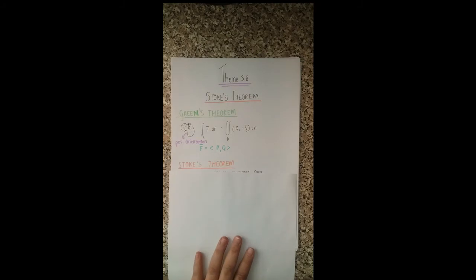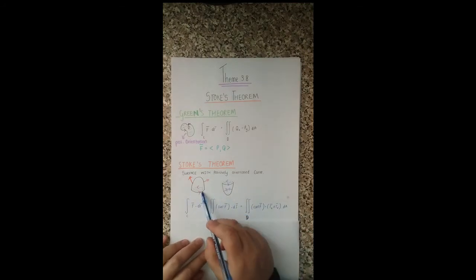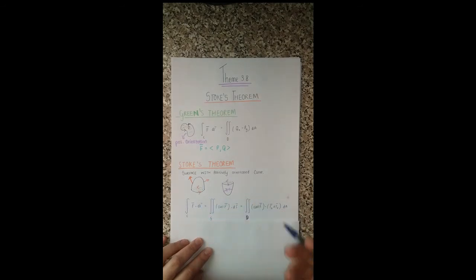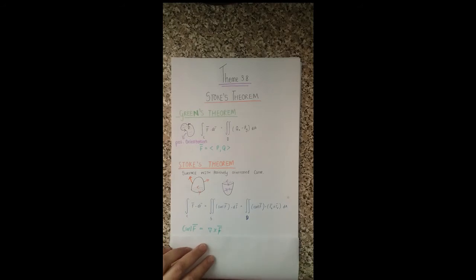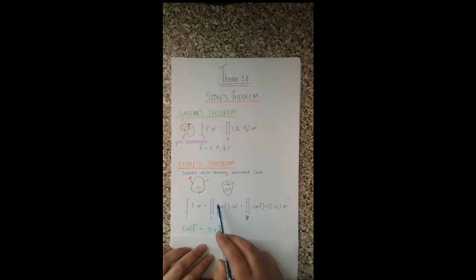What Stokes' theorem does is relate the line integral of a curve to a surface that is above the curve. The surface has to have a positively orientated curve, and basically what it says is that the line integral of the flux is equal to the double integral of the curl of F dotted with dS. So it's the flux integral of the curl — and we're working with surfaces instead of areas as in Green's theorem.